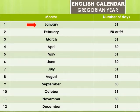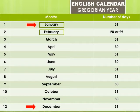The first month is January — J-A-N-U-A-R-Y. It has 31 days. The second month is February — F-E-B-R-U-A-R-Y. February has 28 or 29 days.